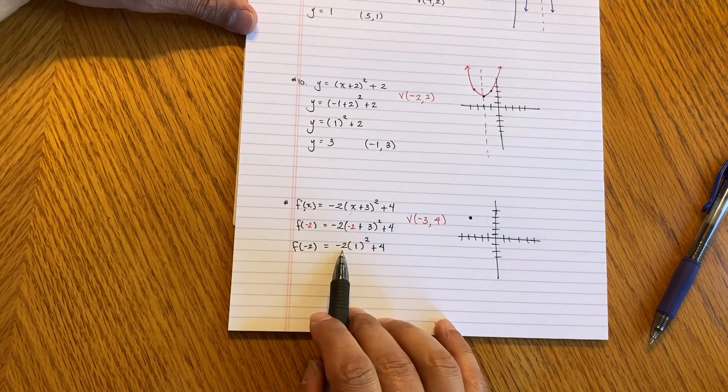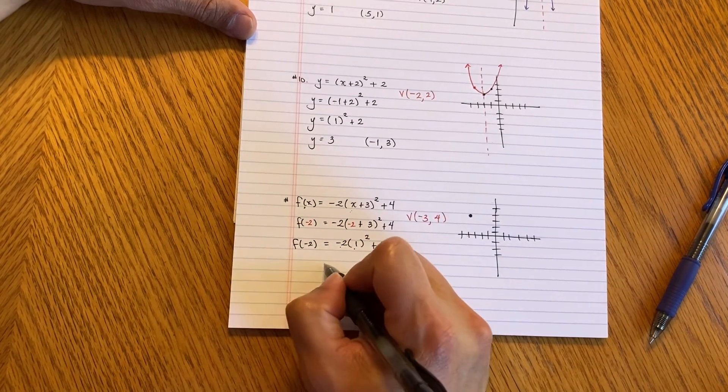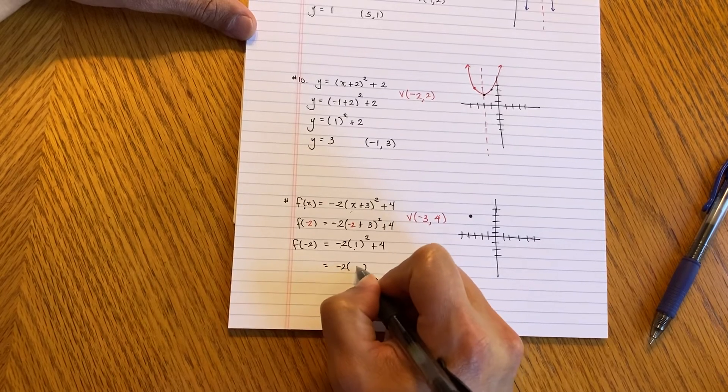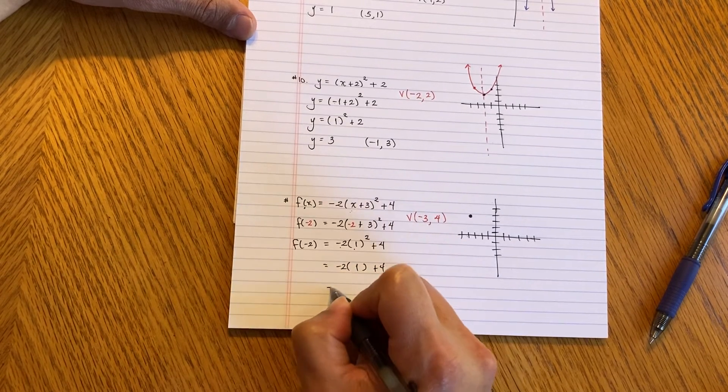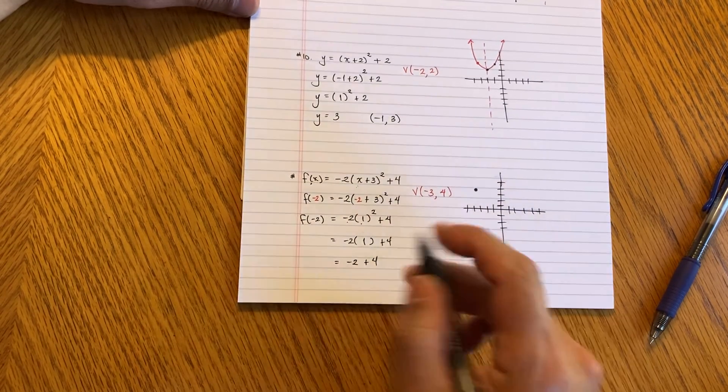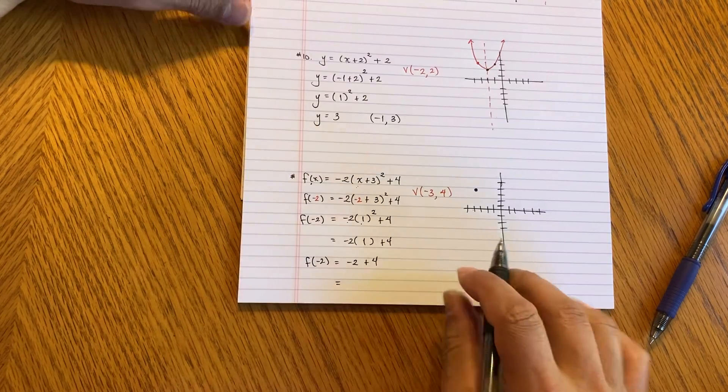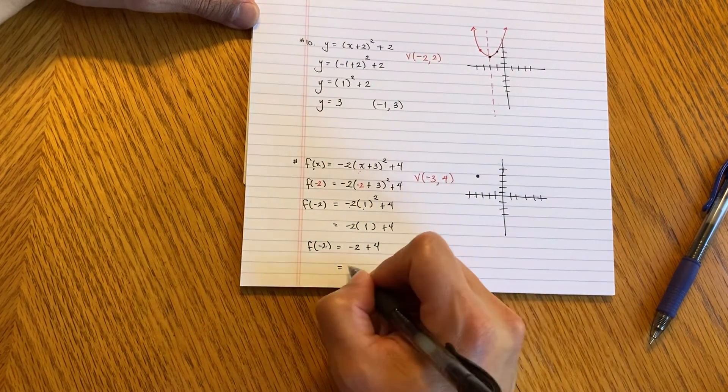Now, a lot of students, they do negative 2 times 1, but that's incorrect. You have to do the exponent first. So 1 squared is 1. And then negative 2 times 1 is negative 2. And then plus 4. And then F of negative 2, we're going to get negative 2 plus 4 is positive 2.